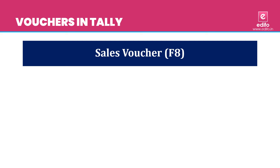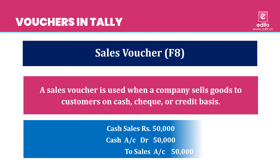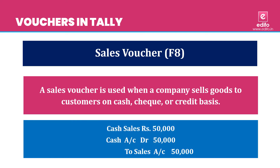The next predefined voucher is Sales Voucher — a very important voucher in Tally — and its function key is F8. A sales voucher is used when a company sells goods to customers on cash, cheque, or credit basis. You can use this voucher for passing the journal entry relating to all types of sales, whether in cash, through bank, or on credit basis. For example, cash sales Rs. 50,000: journal entry is cash account debit 50,000 to sales account 50,000.